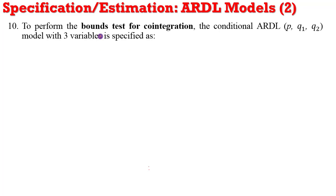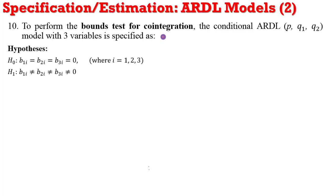To perform the bounds test, the conditional ARDL(P,Q1,Q2) is specified — here I'm using three variables, so I have ARDL(P,Q1,Q2), where P represents the lag orders for the dependent variable and Q1, Q2 represent the lags for the regressors. The null hypothesis for the bounds test states that the coefficients of the long-run equation are all equal to zero, implying no cointegration, against the alternative that these coefficients are not equal to zero. If we are unable to reject the null hypothesis, then we can only specify the short-run model.